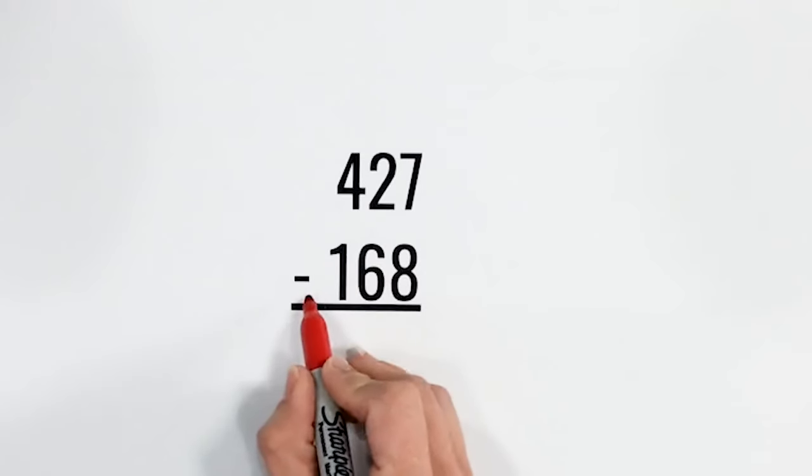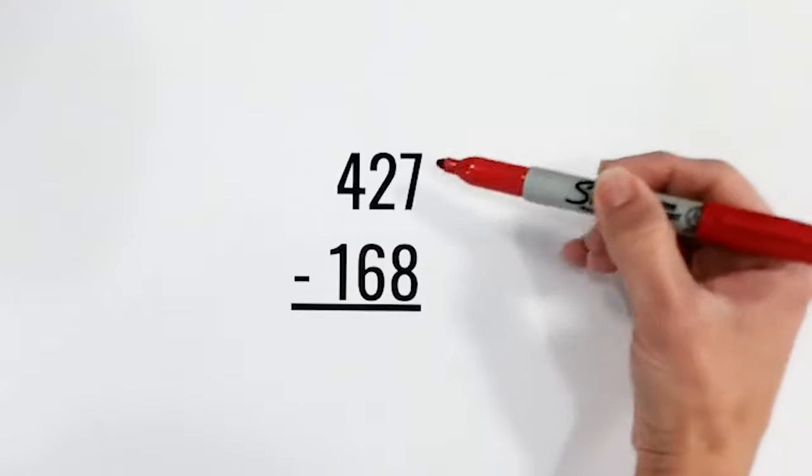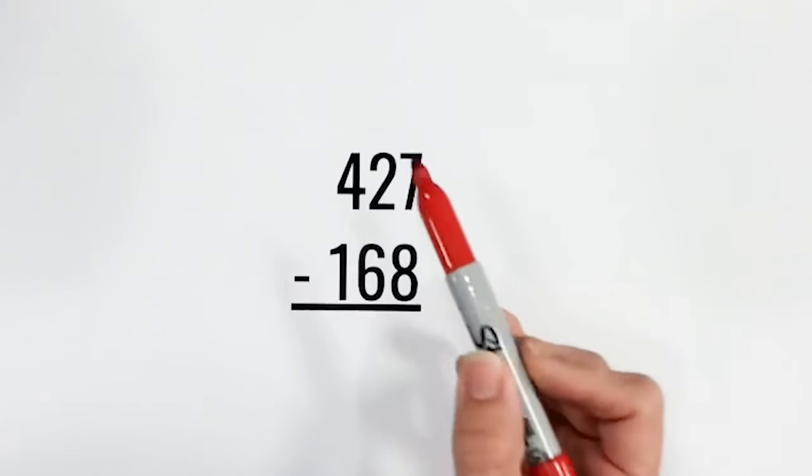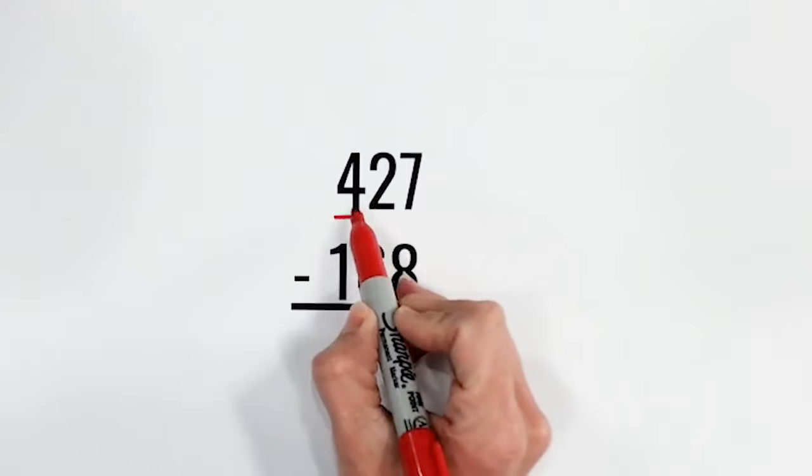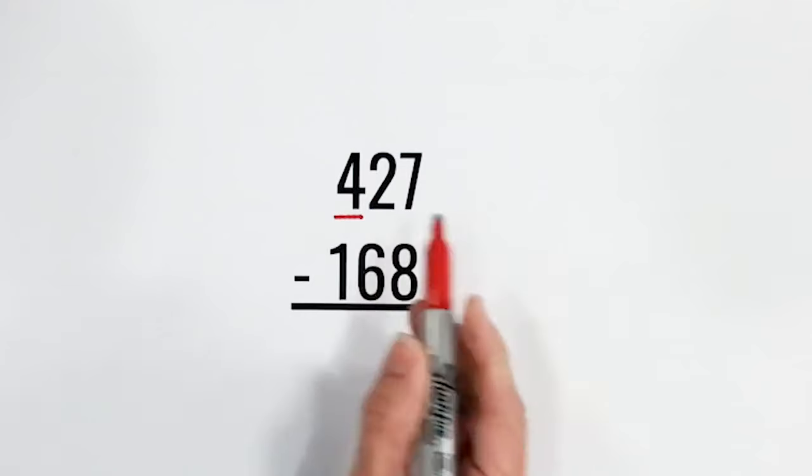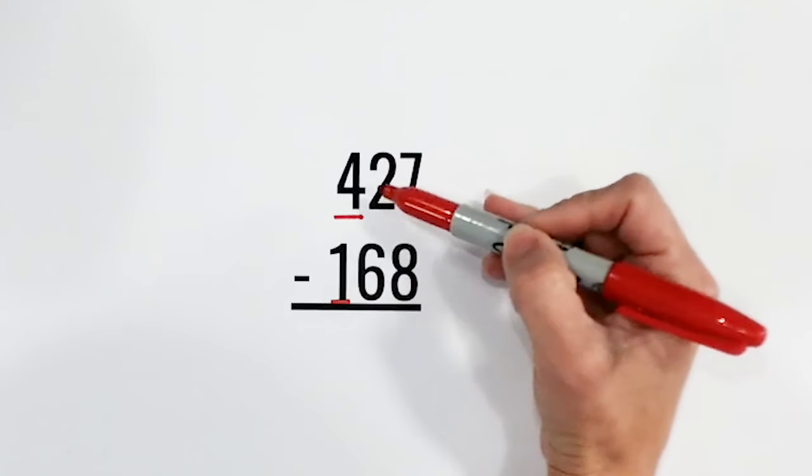So let's get started with our first example. In this problem, we have 427 minus 168. So the first thing we want to do is we want to take these two numbers and we want to round them to the highest place value. So in this top number, it's the 4 in the hundreds place. And then we have the 1 in the hundreds place here. So we're going to subtract these numbers.